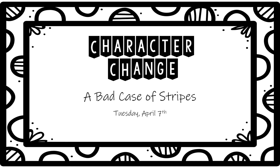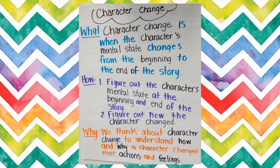So today we're going to be reading A Bad Case of Stripes by David Shannon. We already know that we can learn a lot about a character by looking at how the character's actions. By noticing a character's actions, we can figure out how a character feels, and what they want, and what they like, and what their mental state is.